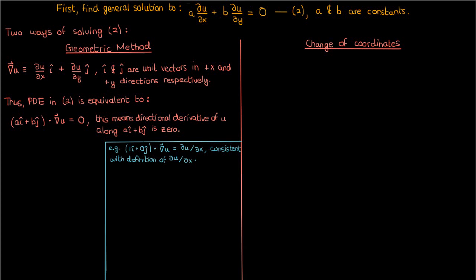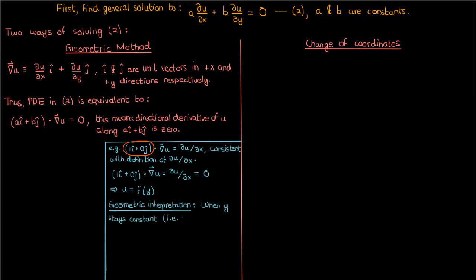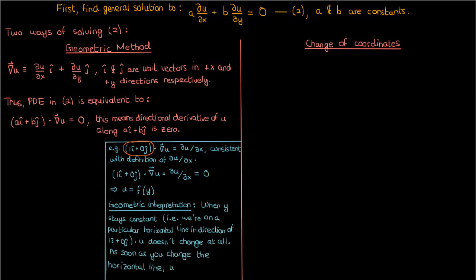What if my vector ai plus bj was just the unit vector i? In other words, a equals 1 and b equals 0. Then this equation is just a specific version of the PDE in equation 2, and we would be solving partial u partial x equals 0. The solution is simply u equals some pure function of y. Geometrically, this means that when we're moving along a particular horizontal line — along the vector 1i plus 0j — the function u doesn't change. However, as soon as you change y, u changes.